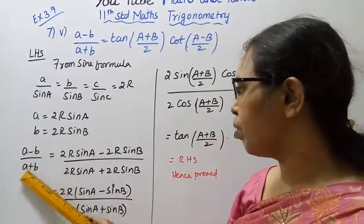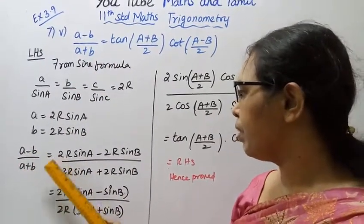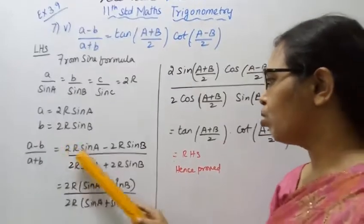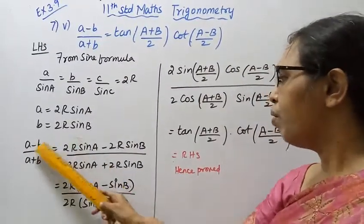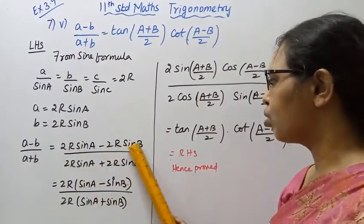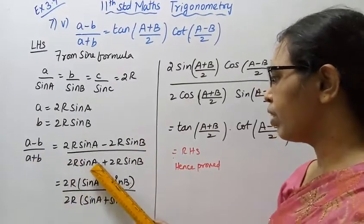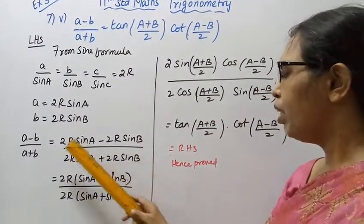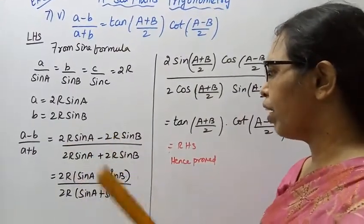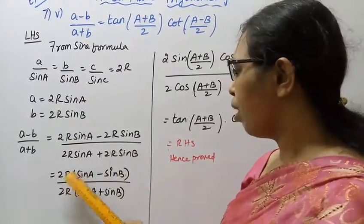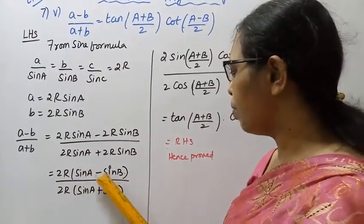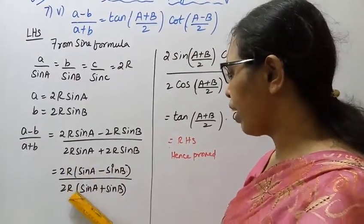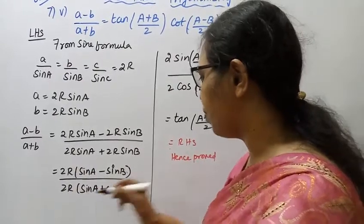Left hand side is (a minus b) by (a plus b). Substituting: (2R sine A minus 2R sine B) by (2R sine A plus 2R sine B). Taking 2R common, we get (sine A minus sine B) by (sine A plus sine B).